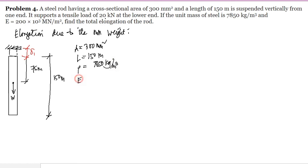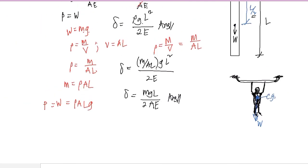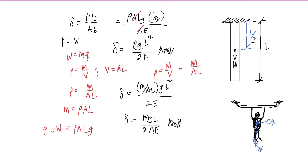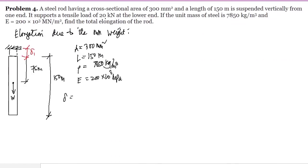The modulus of elasticity is 200 × 10³ MPa. From the derived formula, the deformation formula to use depends on what is given. We use this formula when density is given, and another formula when mass is given. Since density is given here, we use: δ = ρGL²/2E.